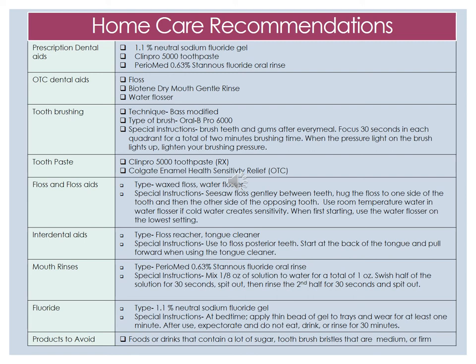For the toothpaste, we recommend the ClınPro 5000 toothpaste, which is a prescription. If she is unable to get a prescription, we recommend Colgate Enamel Health Sensitivity Relief, as it is over-the-counter. For floss and floss aids, she should use wax floss and a water flosser. Special instructions include see-sawing the floss gently between the teeth, hugging the floss to one side of the tooth, then the other side of the opposing tooth. For the water flosser, use room temperature water if cold water creates any sensitivity. When first starting to use a water flosser, use it on the lowest setting and increase as needed. For interdental aids, we have a floss threader for the posterior teeth and a tongue cleaner, starting at the back of the tongue and pulling forward, rinsing and reusing as needed.